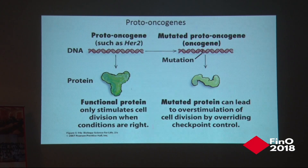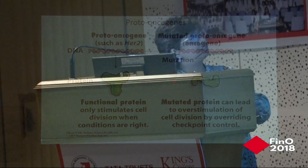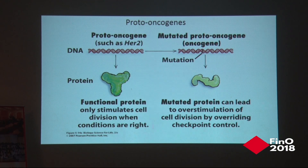There are something called proto-oncogenes. For example, HER2 is a receptor tyrosine kinase — a normal protein that stimulates cell division when conditions are right. When mutated, this proto-oncogene changes into an oncogene, and the mutated protein leads to over-stimulation of cell division, overriding checkpoint control. The cells become independent of external cues; in a normal cell, division requires a signal from the microenvironment, but in these cases the proteins become independent of any external signal and the cells keep on dividing.